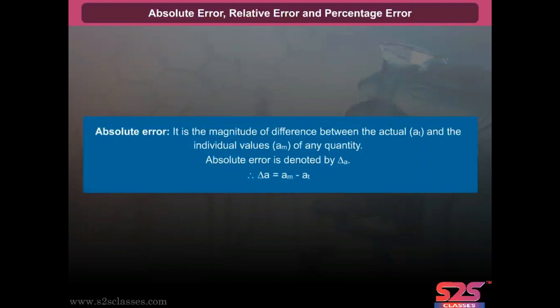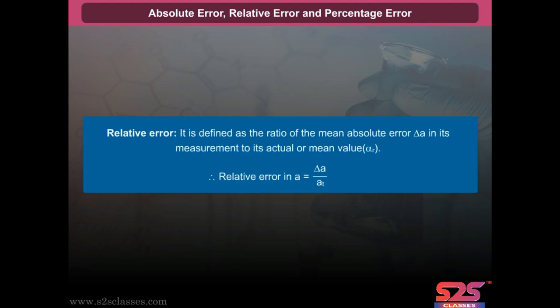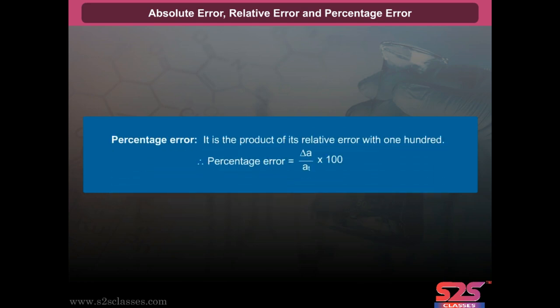Absolute error is the magnitude of the difference between the actual or mean value A_T and the individual measured value A_M of any quantity, denoted by delta A: delta A = A_M − A_T. Relative error is defined as the ratio of the mean absolute error delta A to its actual or mean value A_T: relative error = delta A / A_T. Percentage error is the product of relative error with 100: percentage error = (delta A / A_T) × 100.